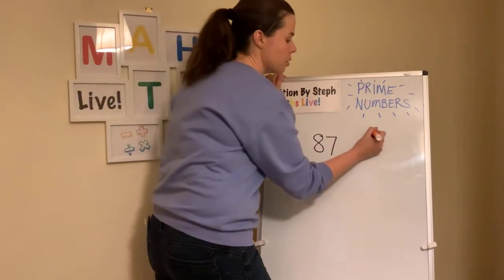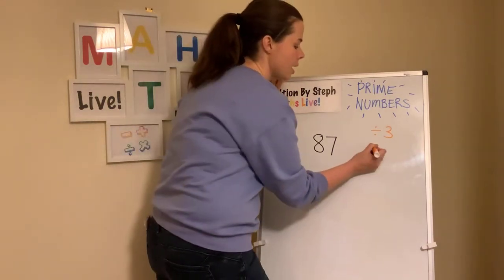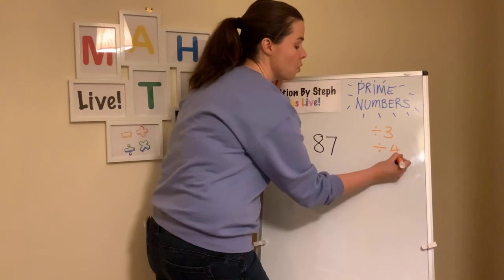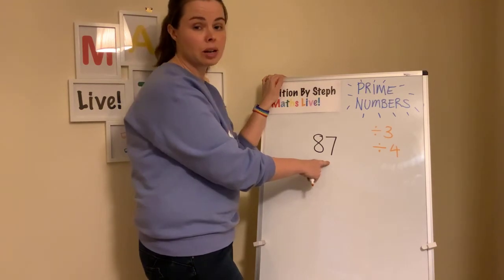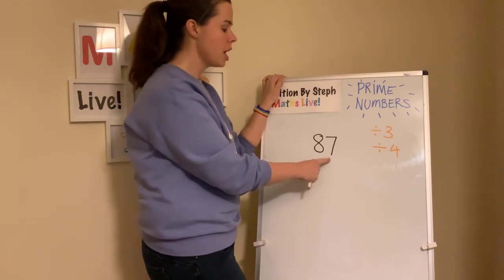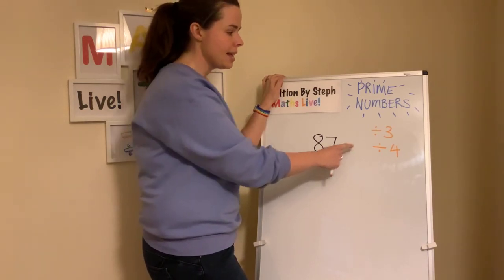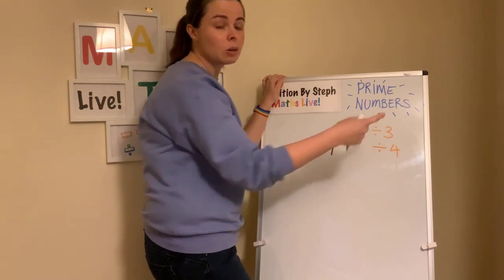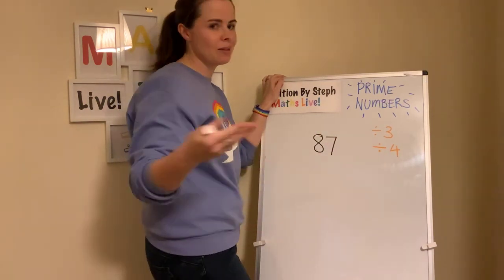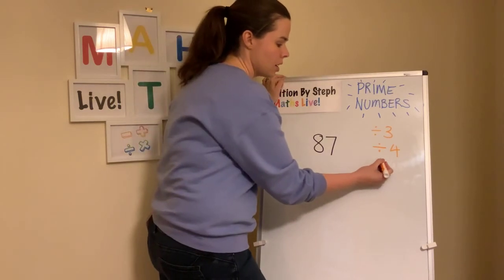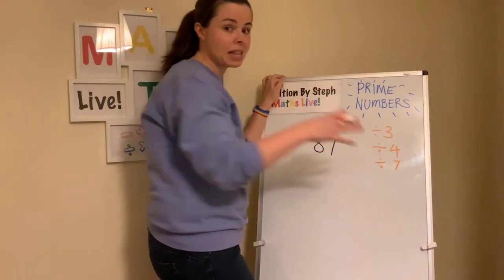All you need to do is try dividing it by three and see if you can divide it as a whole number, and see if you can divide it by four. You don't need to do your twos because you'd know if it was in the two times table because it would end in an even number. You know it's not in the fives because it doesn't end in a five or zero. If it divides by three, it'll be in the six times table. If it divides by four, it'll be in the eight times table. And then try seven — those are the only three numbers you need to try.